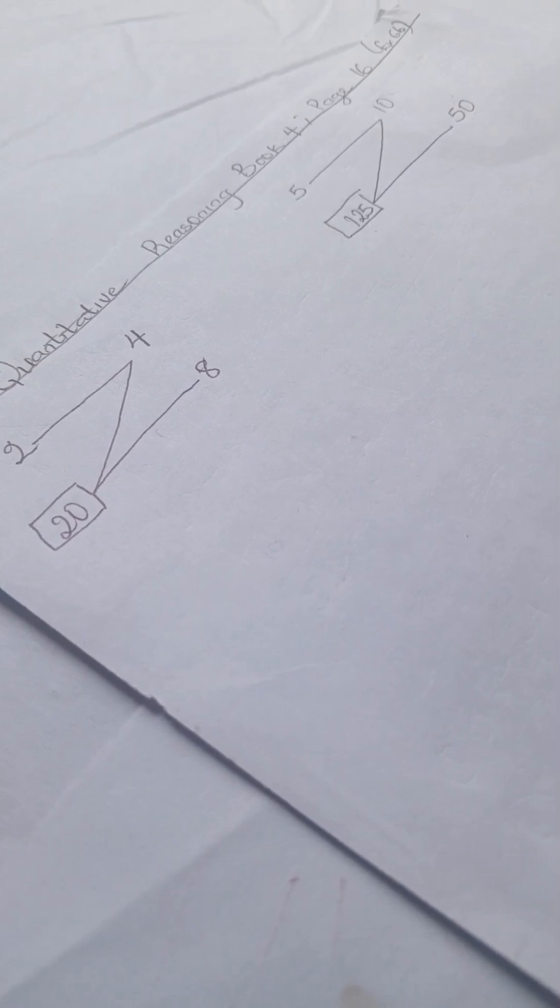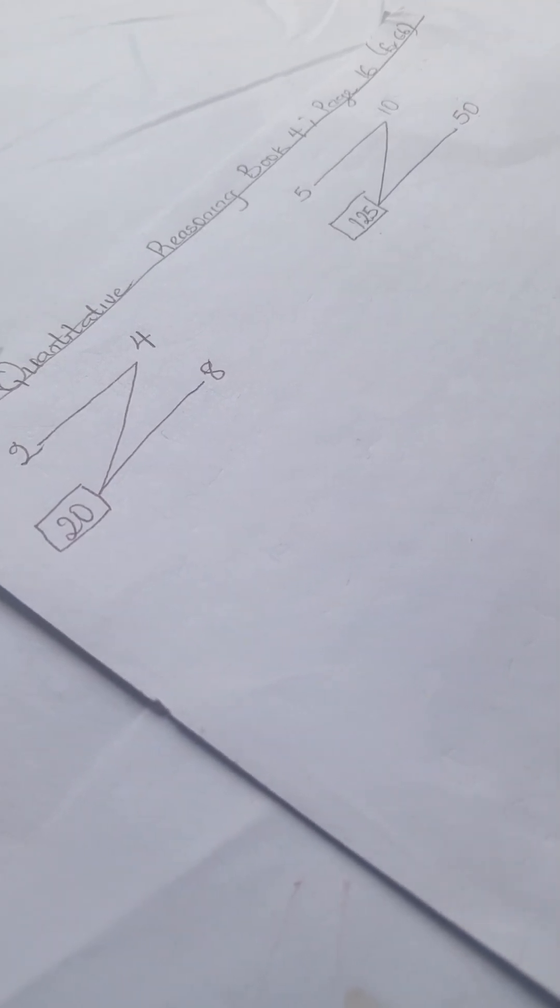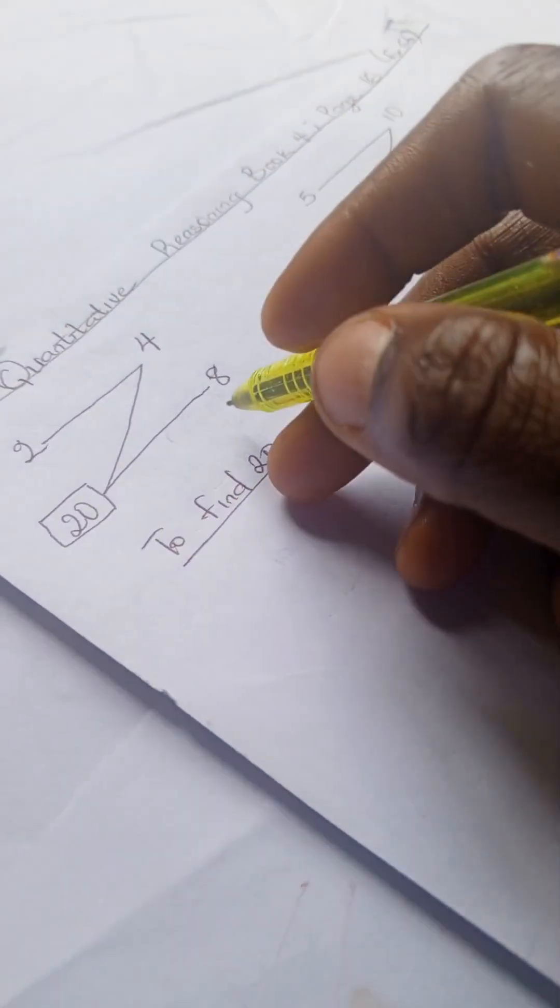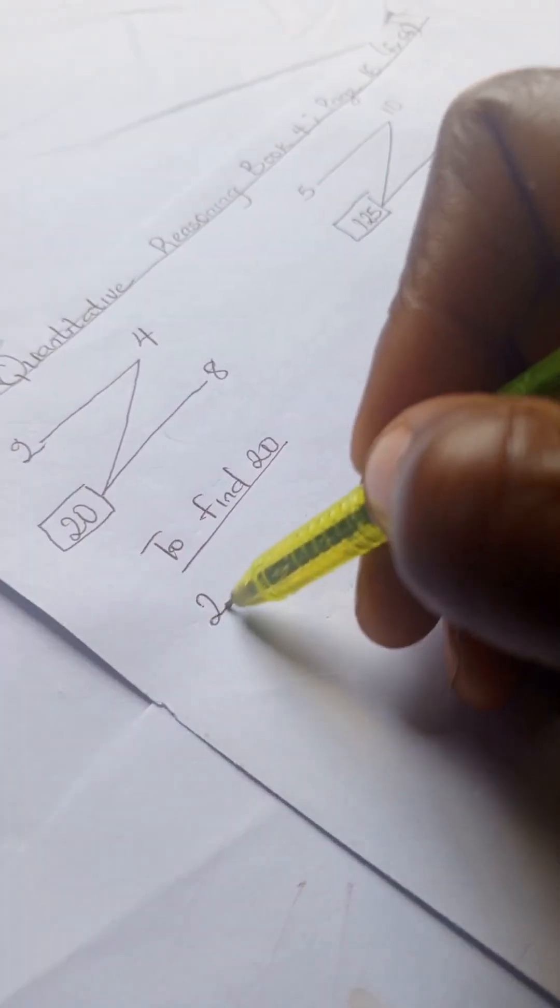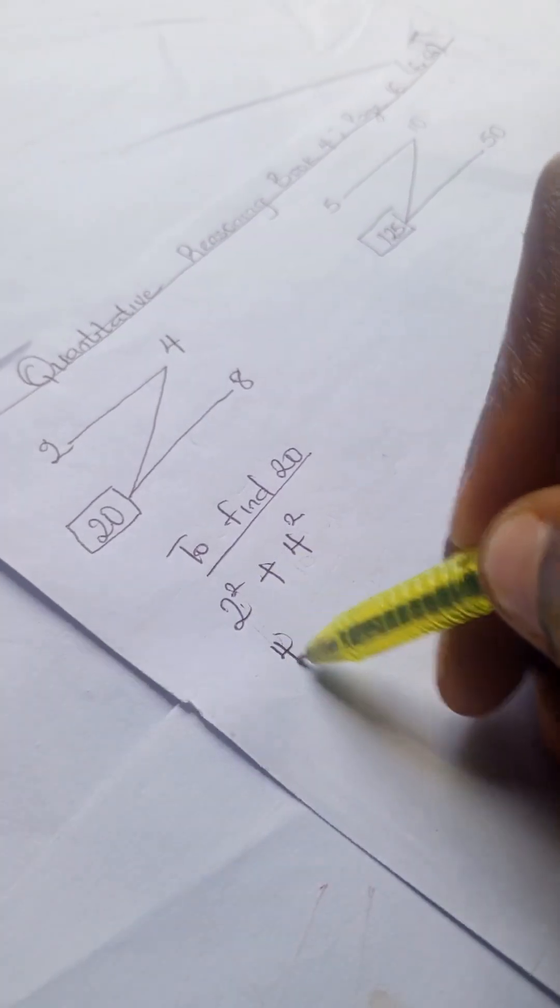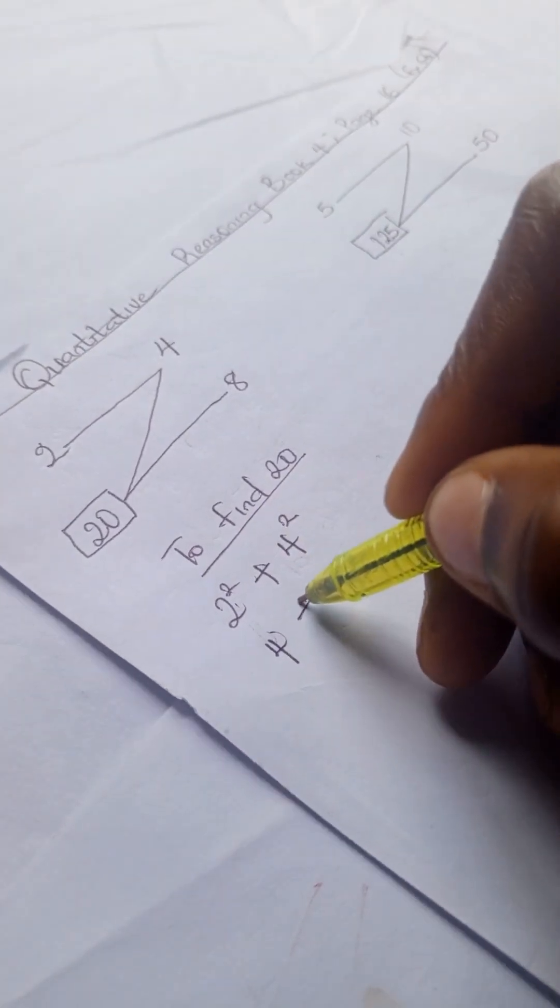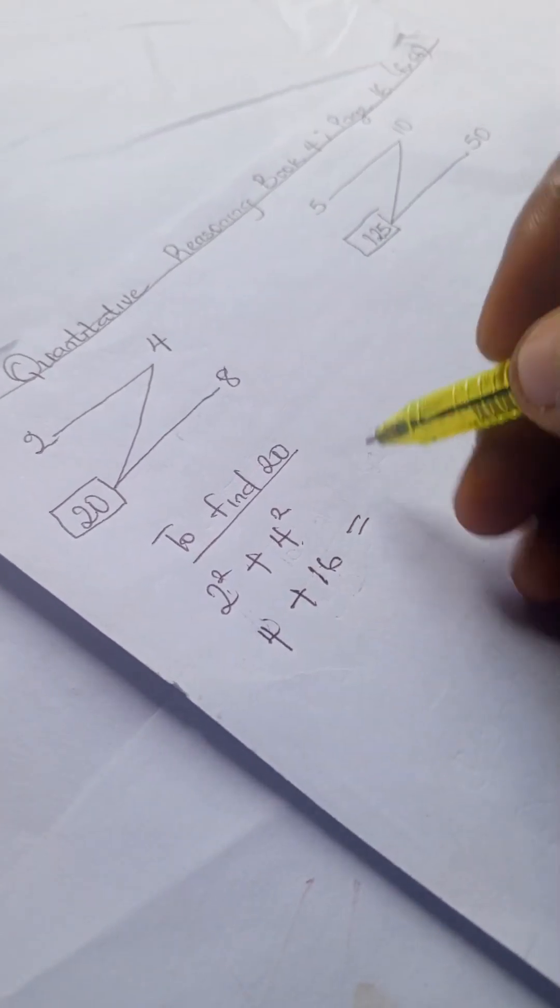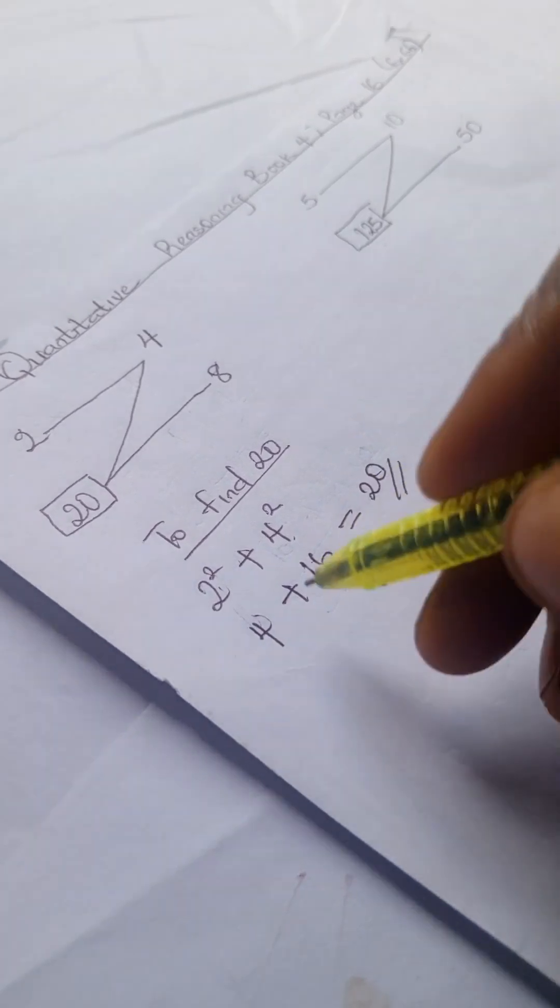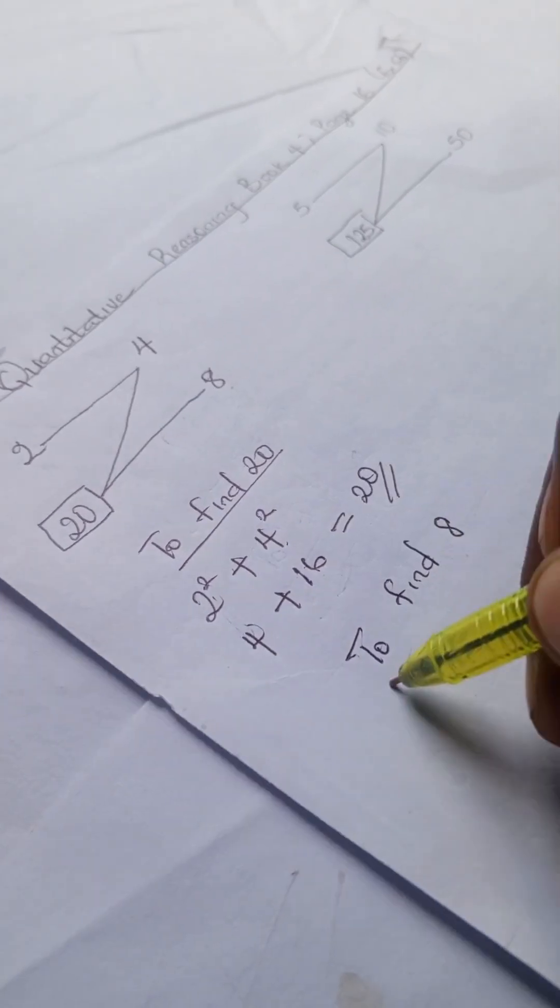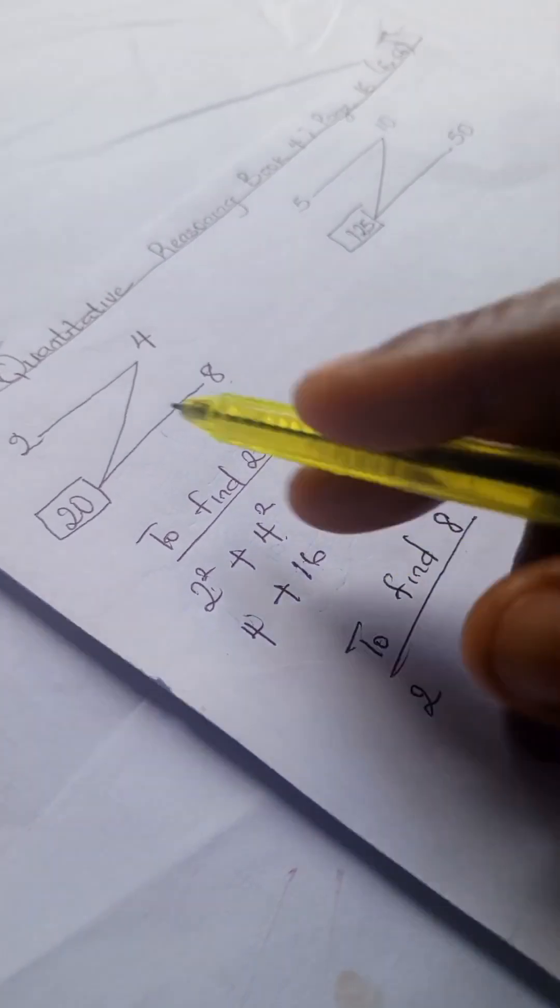To find 20, we have 2 squared plus 4 squared. That gives us 2 squared is 2 times 2 equals 4, plus 4 squared. We have 4 times 4 equals 16, and 4 plus 16 is 20. To find 8, 2 times 4 gives us 8.